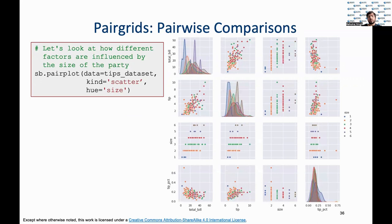Pairplot is a Seaborn visualization that can help make comparisons based on one target variable. Here we are trying to see how different factors like total bill and tip percentages are influenced by the size of the party. We can observe that as the party size grows, the tip percentage also generally seems to grow, and so does the total bill, which can be a naturally expected occurrence. So we now know that the visualizations are not deceiving us.